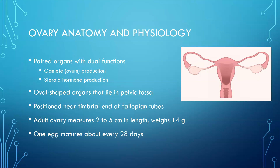The ovaries are paired organs with dual functions, just like the testes. Their function is ovum production — producing the eggs — and steroid hormone production, which for the female is mainly estrogen and progesterone. They are oval shaped and lie in the pelvic fossa. In this diagram, the ovaries are positioned near the fimbriated end of the fallopian tubes, which have finger-like projections. Also shown are the uterine tubes, the uterus, the cervix, and the vagina. The adult ovary measures two to five centimeters in length, weighs about 14 grams, and one egg matures about every 28 days.